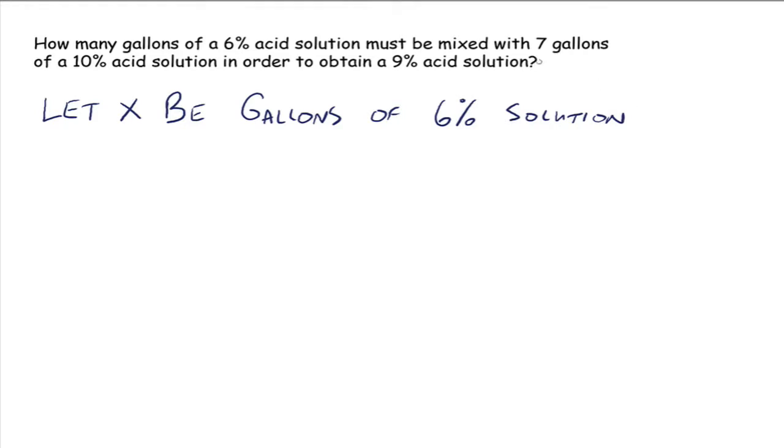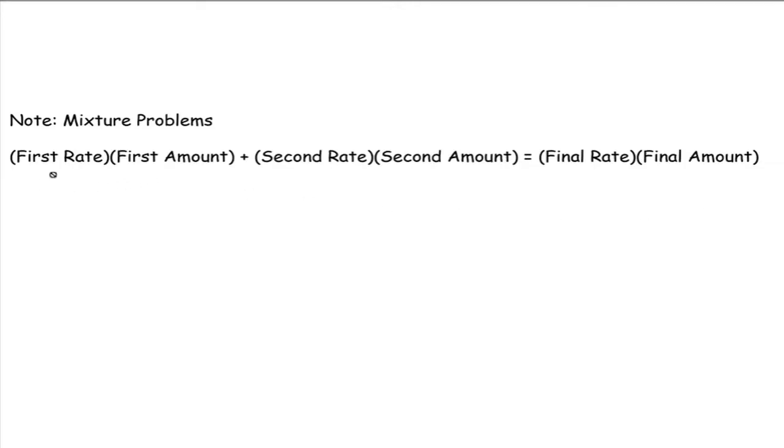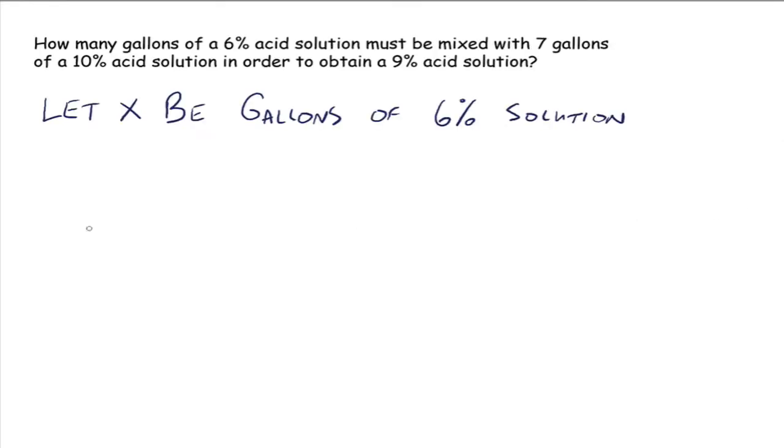We already know we have 7 gallons of the 10% acid solution. So we want to get to a 9% solution. So following our little template over here of first rate times first amount plus second rate times second amount equals final rate times final amount. What can we do? What's the first rate? What's the rate right here? Well, 6% would be the rate, so to speak. But we don't use percentages. We remember to change percentages into decimal numbers. So we have .06 would be the rate.